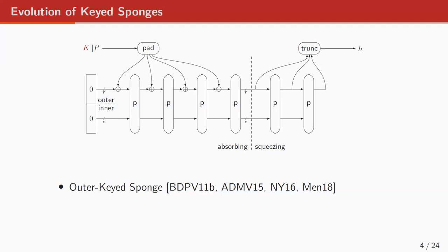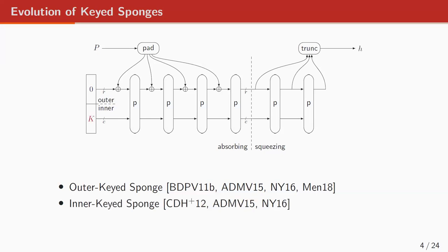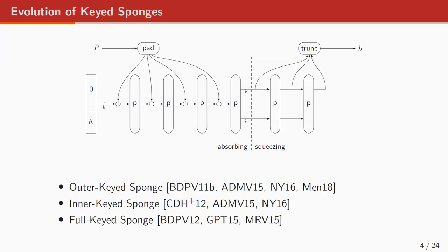The earliest idea of the keyed sponge is the outer keyed sponge — you glue together the key and the plaintext, pad it, and squeeze. Currently we call it the outer keyed sponge. People also observed you can inner-key-sponge it: put the key not with the plaintext but into the inner part, and the scheme still achieves generic security. And finally, assuming the permutation is good enough, we can key in the inner part and absorb plaintext not R bits at a time but B bits at a time — this is now known as the full-keyed sponge or full state keyed sponge.